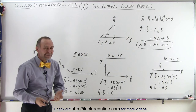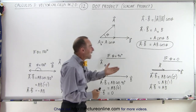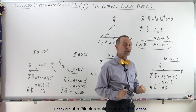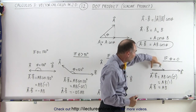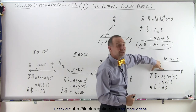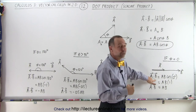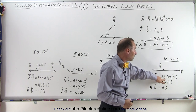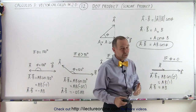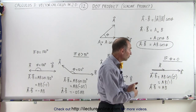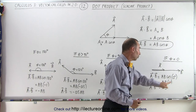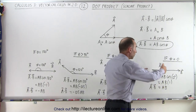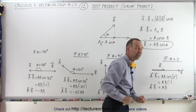Now what happens if we see different angles? What if the angle between them is equal to zero, so both vectors are pointing in the same direction? In that case the projection of a onto b is the full length of a, so a·b equals the magnitude of a times the magnitude of b times the cosine of zero. The cosine of zero is one, so it simply becomes a times b, which is exactly what we'd expect since the projection of a onto b is the full length of a.